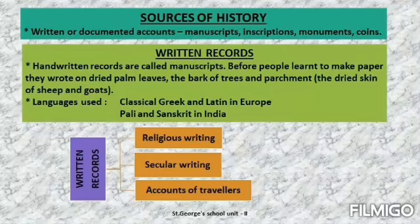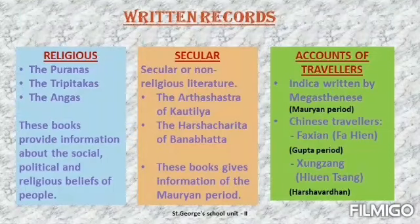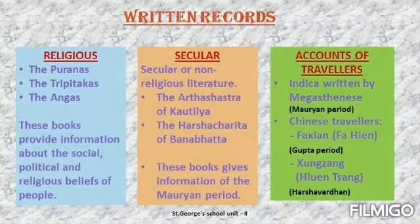Written records are of three types: religious, secular, and accounts of travelers. First, we will discuss religious writings. Religious writings are those writings which mainly deal with religion. Examples include the Puranas, the Tripitakas and the Angas.